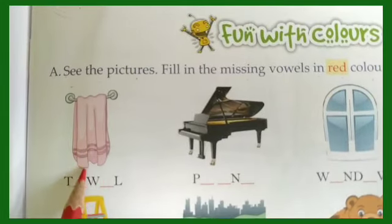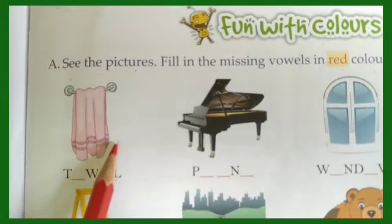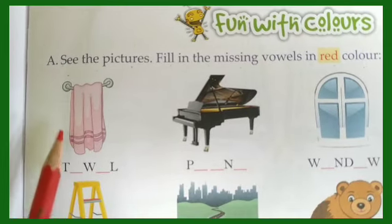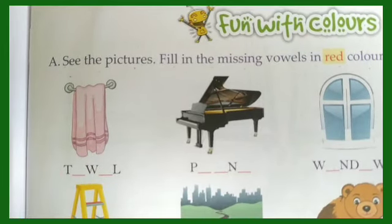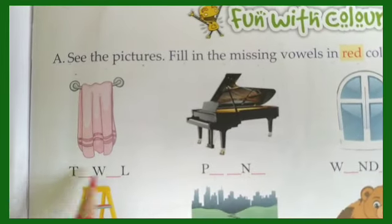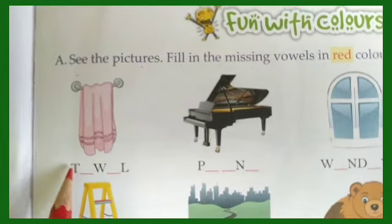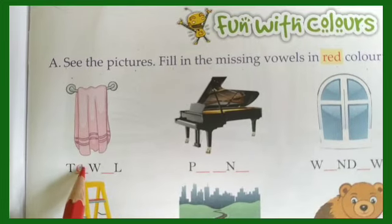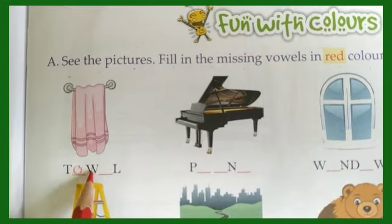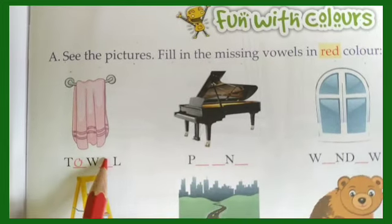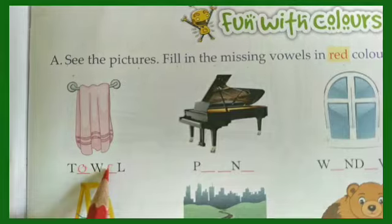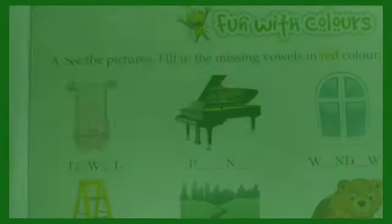What is this? Towel. You know the spelling of towel? The spelling is T-O-W-E-L, and the missing letter is O — a vowel.